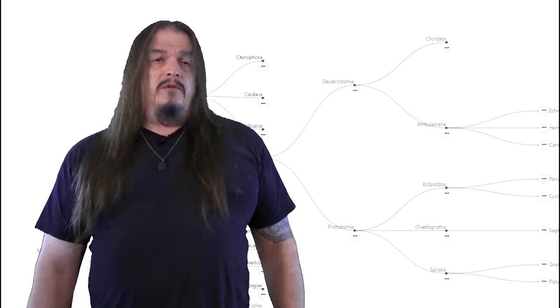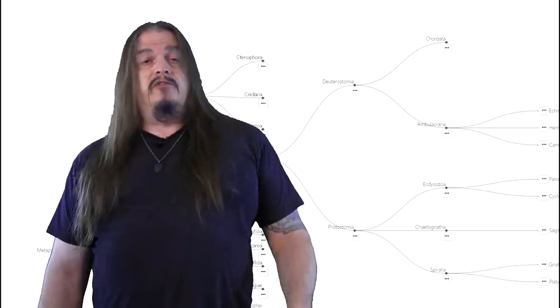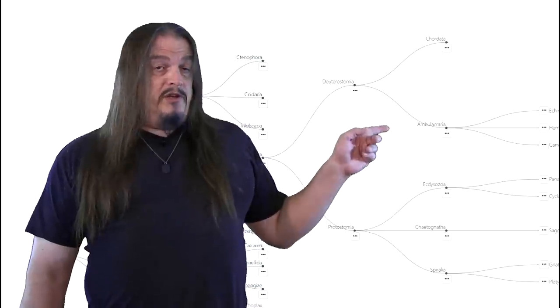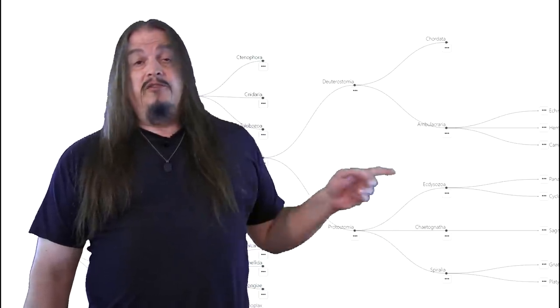For example, some deuterostomes inherit hemoglobin while chelicerates and mollusks, both protostomes, inherit hemocyanin. That means that this branch leads to red blood and this branch leads to blue blood.